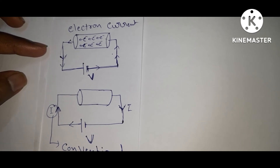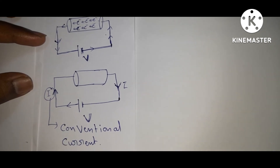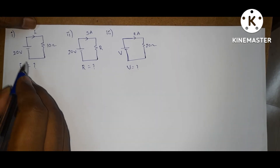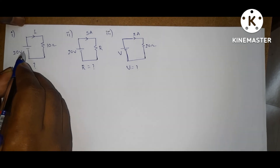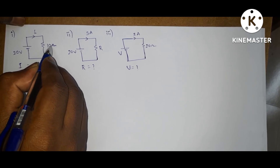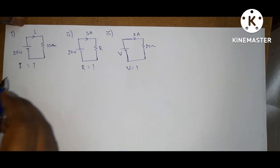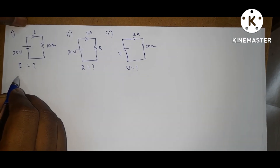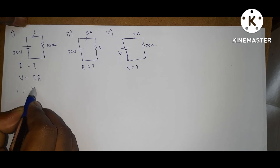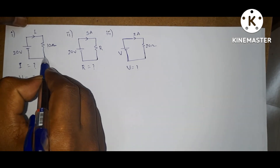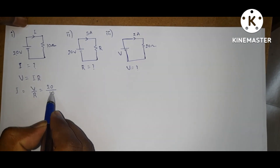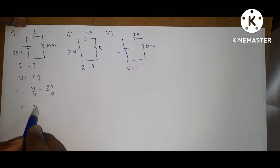This is very important — there is a chance of it being asked in interviews. Now let us solve some simple problems based on Ohm's law. In the first circuit, given voltage value and resistance value — resistance is measured in ohms — find current I. By Ohm's law, V = IR, so I = V/R. The voltage across the resistance is 20 V and resistance is 10 Ω, so current I equals 2 amps.